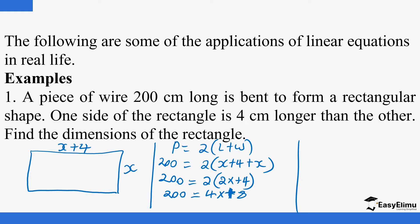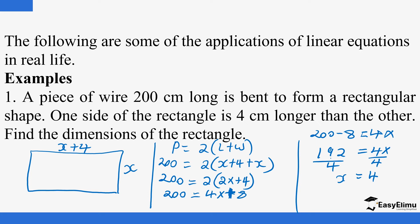So now we can solve this. 8 moves to the other side and becomes minus, giving us: 200 − 8 = 4x. That is 192 = 4x. To find the value of x, we divide both sides by 4. 4 goes into 192: 4 into 19 is 4 (remainder 3), giving 32, and 32 ÷ 4 is 8, so x = 48.